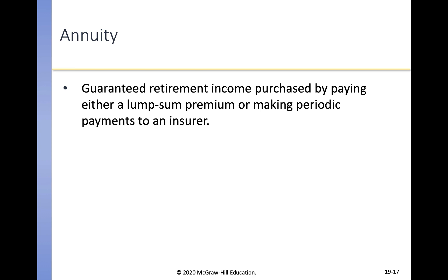An annuity is a guaranteed retirement income purchased by paying either a lump sum premium or making periodic payments to an insurer. The insured may choose to receive income for a fixed number of years — with a beneficiary receiving whatever is left — or may choose payments for as long as the insured lives, relinquishing whatever is left upon death. These policies often pay out a stream of payments rather than one big lump sum.